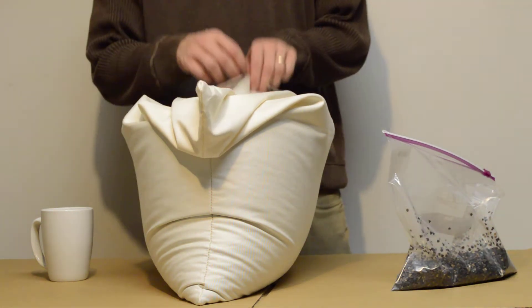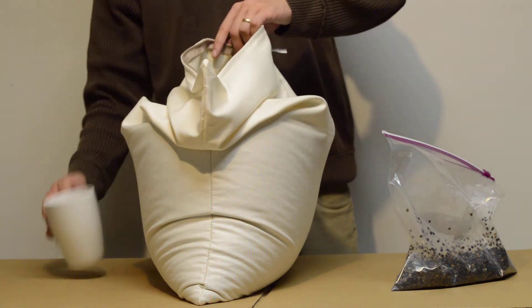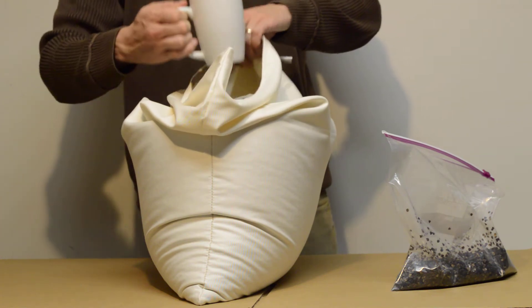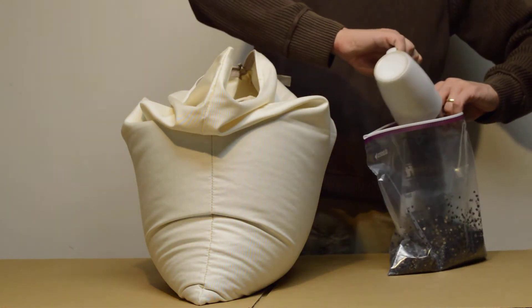You just open up your zipper on your hollow, exposing the hulls. Use the cup to carefully scoop the hulls out of your cover, and then pour them into your storage bag.